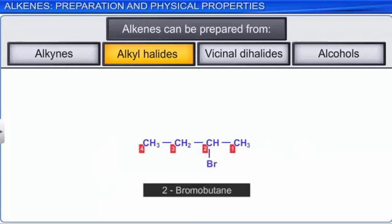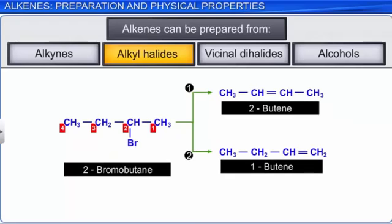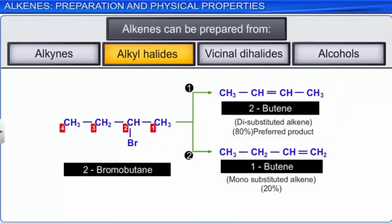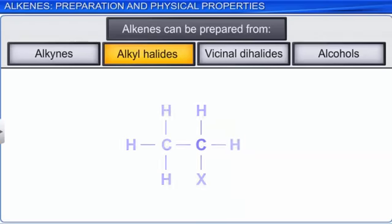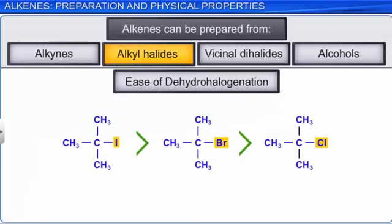In a dehydrohalogenation reaction, if there are two possible positions where the double bond can be formed, then the product obtained is governed by Saytzeff's rule. Saytzeff's rule states that elimination would predominantly proceed to the formation of the olefin in which the double bond is highly substituted. In other words, the hydrogen atom will be removed from the carbon atom possessing the lesser number of hydrogens. The rate of reaction depends on the nature of the alkyl group and the halogen: the rate increases from primary to tertiary alkyl halides, and the rate is highest for iodine and lowest for chlorine.